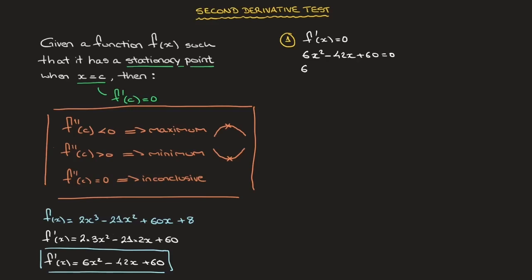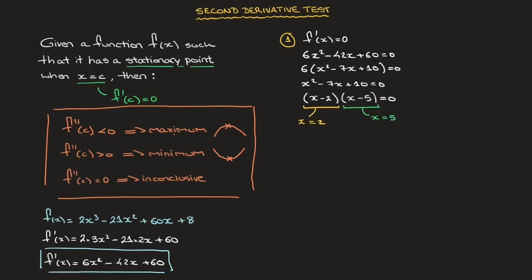Noticing each term has a common factor of 6, we write this as 6(x² − 7x + 10) = 0. The product equals 0 only if the quadratic equals 0, so we solve x² − 7x + 10 = 0. Factoring gives (x − 2)(x − 5) = 0, so x = 2 or x = 5. The function f(x) has two stationary points: one at x = 2 and another at x = 5.